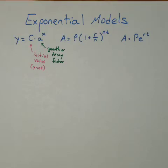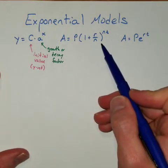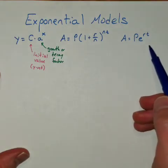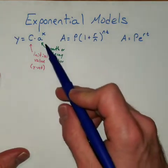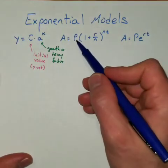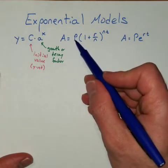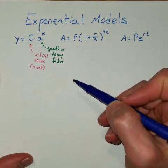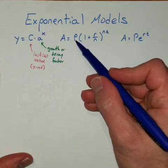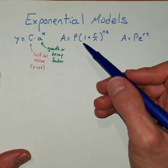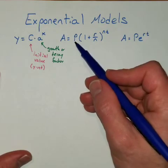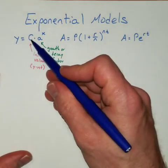Now, we saw two specific types of financial models earlier in this chapter. One was the compound interest formula, and one was the continuous compound interest formula. They both follow the same structure, where the leading coefficient, now represented by P for principal, is the initial value that's invested into an account or borrowed with a loan. So P is the initial value, just like C was here.